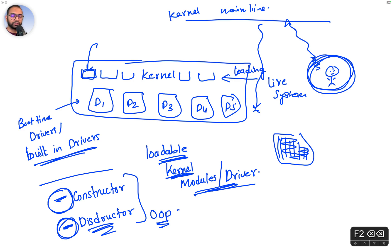To summarize: remember privileged versus non-privileged — user space cannot talk to the hardware directly and must go through the kernel via a device driver. The way user space talks to kernel space is via system calls, and the device drivers implement the system calls. There is also the notion of constructor and destructor for kernel modules. In the next video, we'll dive into writing the kernel modules.